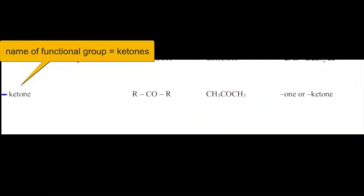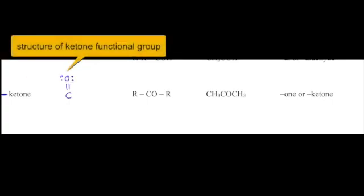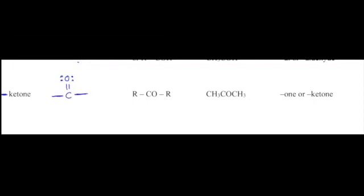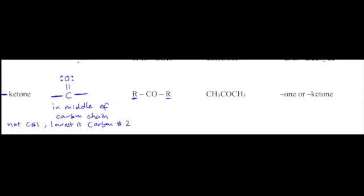The ketone functional group has a carbon with a double bond to oxygen and lone pairs on that oxygen — the same carbon double bond oxygen seen in the aldehyde group. What's different is that this carbon does not have to be at one end of the molecule. It can be somewhere in the middle of the carbon chain and will never be carbon number one. At the lowest possible position, it would be carbon number two. As long as there's a carbon on either side, this is going to be a ketone.